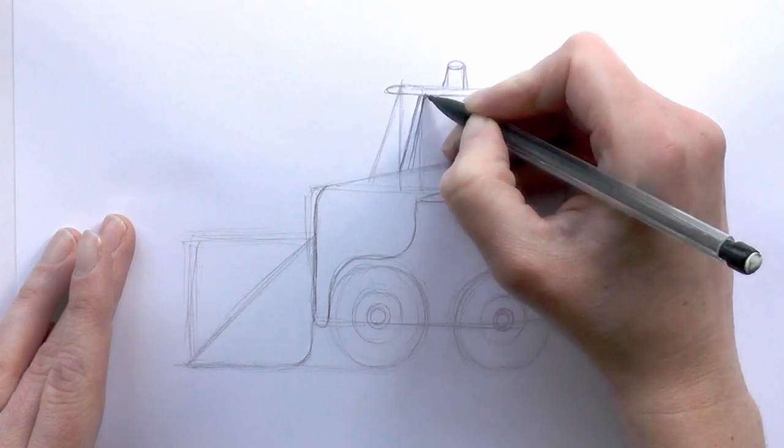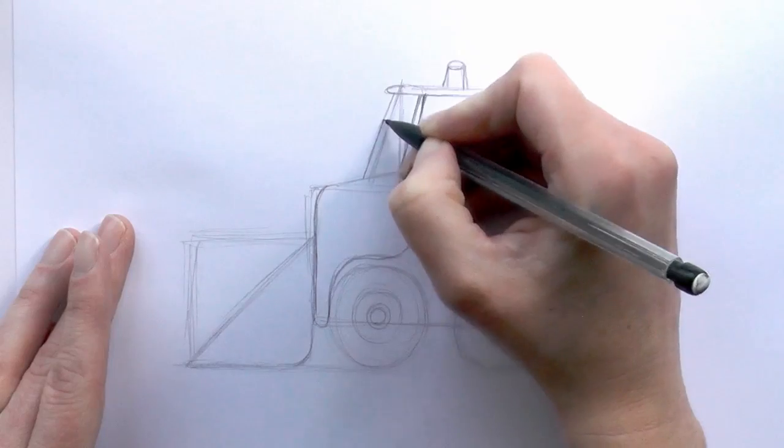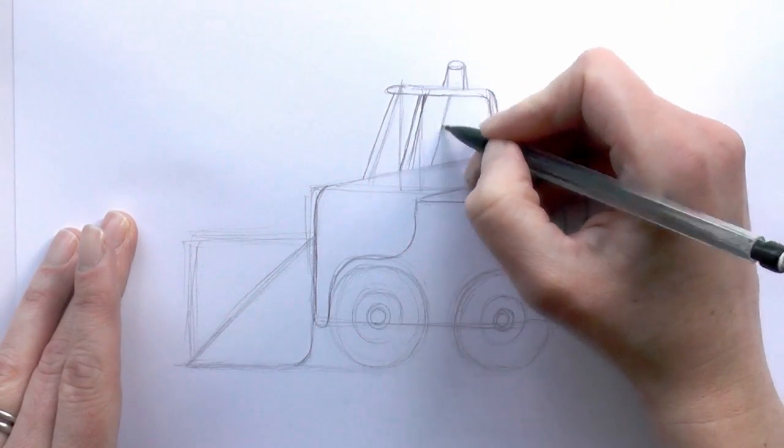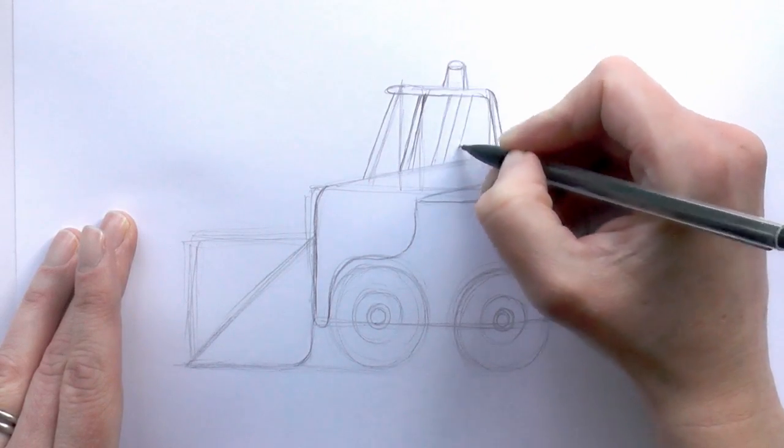And then add another little bit there, and then another little one in front there for the window. Then we just want to add like a mesh texture to the window as well, so again just bring some lines down on an angle like that.